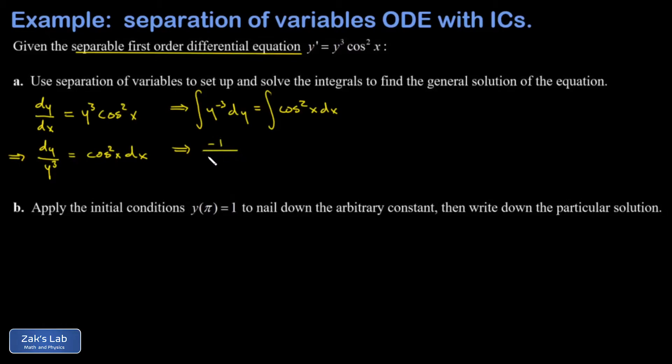On the right hand side we're going to have to use an identity to integrate this. Cos²x turns out to be (1/2)(1 + cos(2x)), and we use this all the time when we find ourselves integrating even powers of sine and cosine.